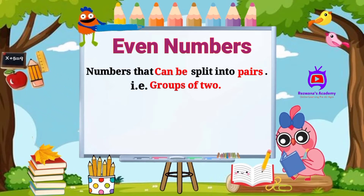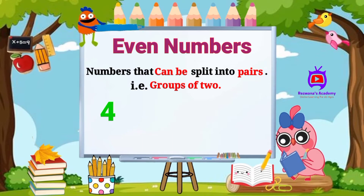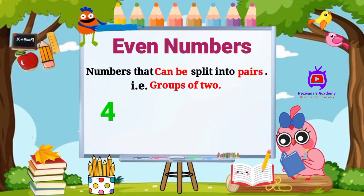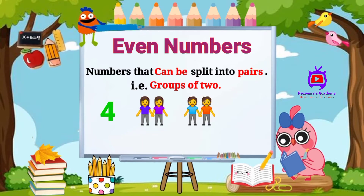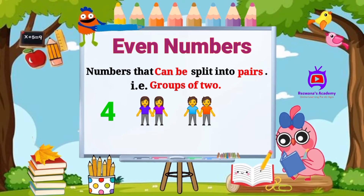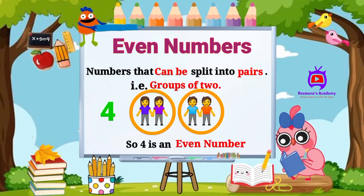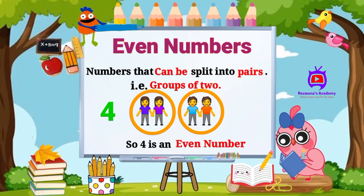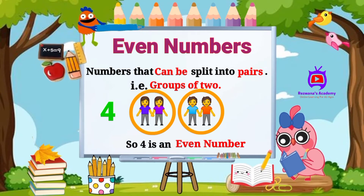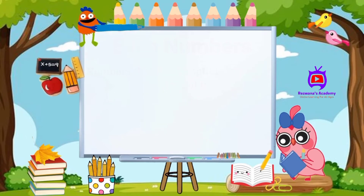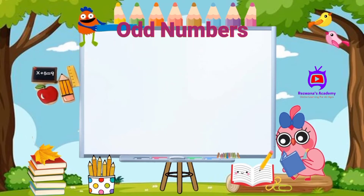Even numbers are groups of two. For example, number four — we have four kids here. If I split them into groups of two, there is none who is alone. So four is an even number. Now let's talk about odd numbers.